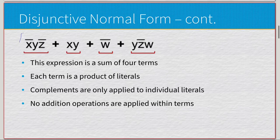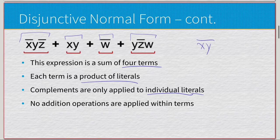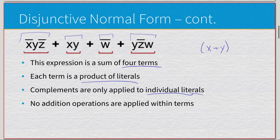Each of these products of literals is called a term. An example would be: negated-x times y times negated-z, plus x times y, plus negated-w, plus y times z times w. This expression is a sum of four terms, each term is a product of literals, complements are applied only to individual literals, and no addition operations appear within any term.